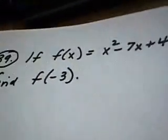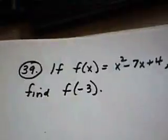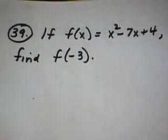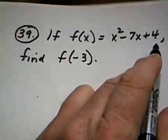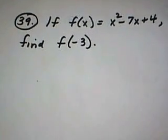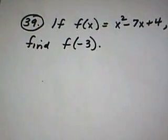So let's go down to my paper and look at the problem. Here's the function: f of x is equal to x squared minus 7x plus 4, and what we're asked to do is to find f of negative 3.